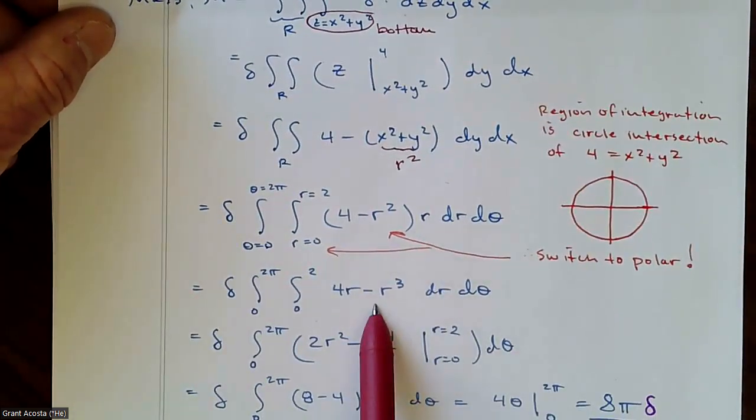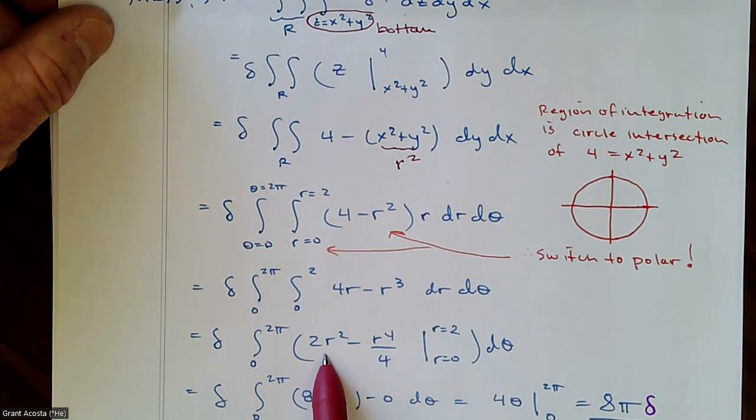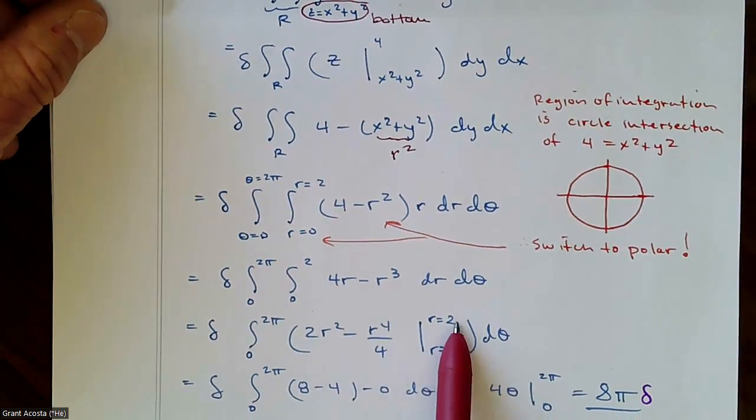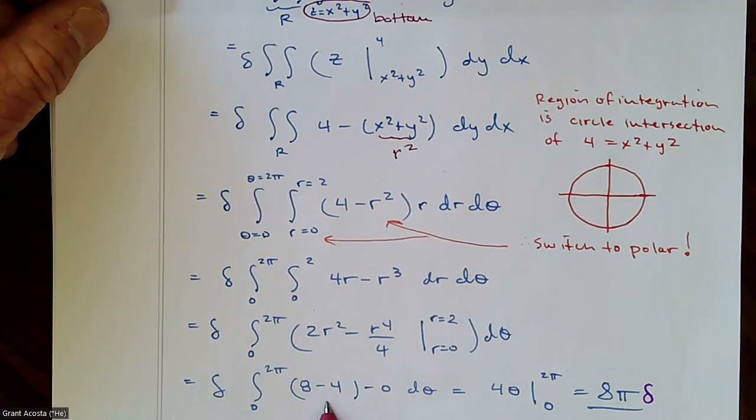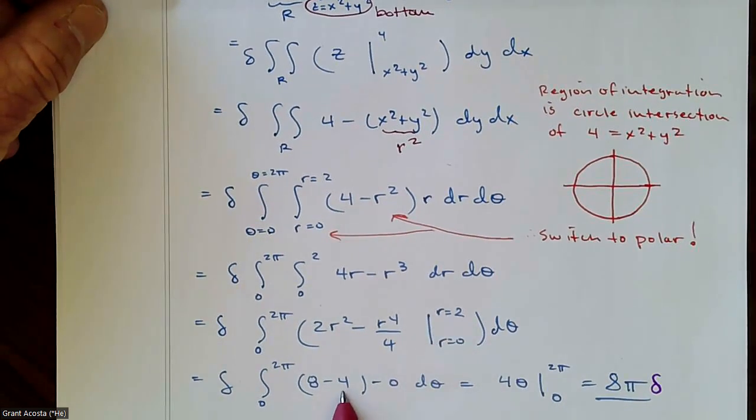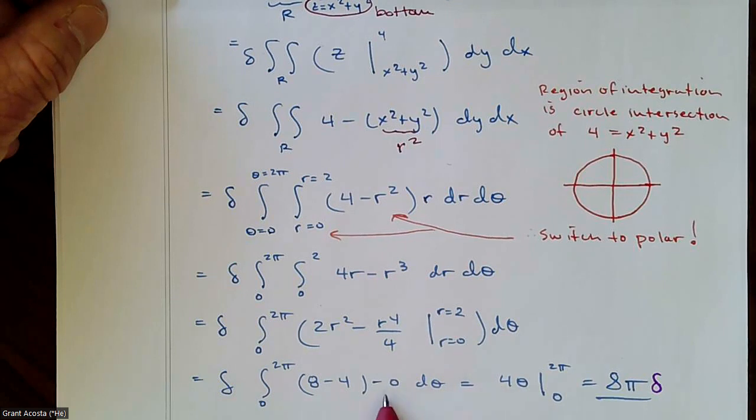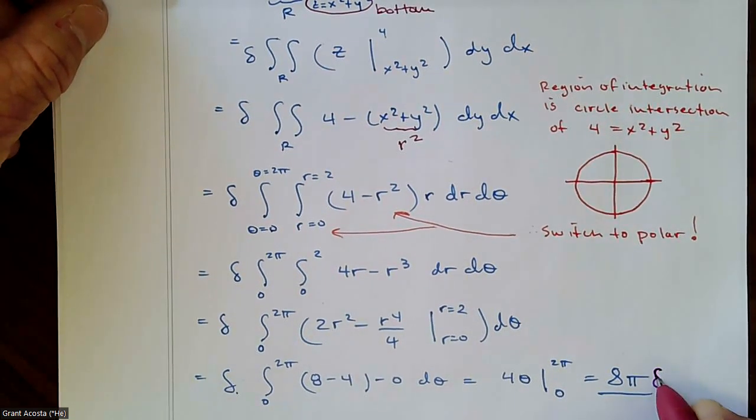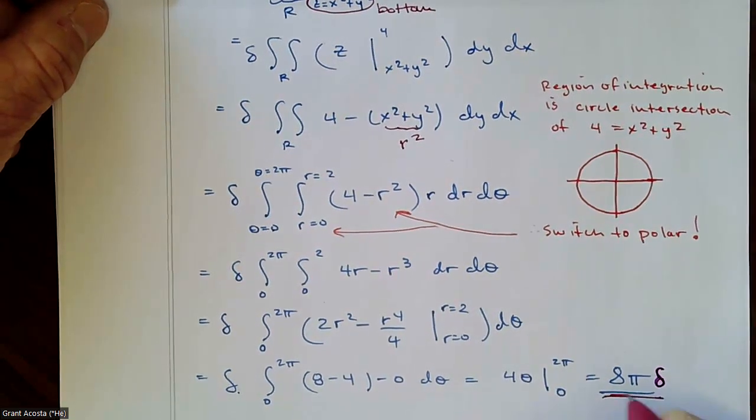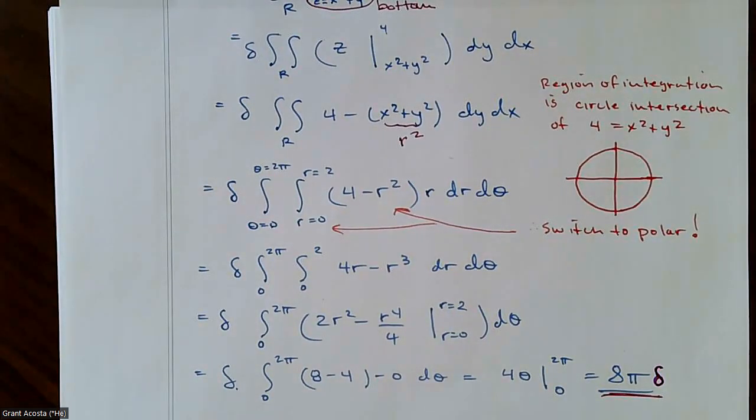And so distributing the r, finding my antiderivative, plugging in my limits, I end up getting just four when I plug in the two. And then antiderivative that is four theta, evaluated from two pi to zero, gives me eight pi times delta, times delta. So that is the mass of this three-dimensional solid.